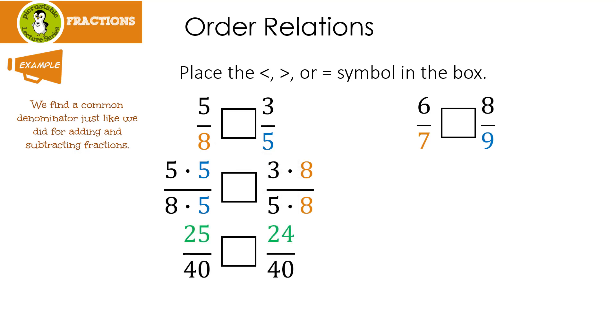When we multiply, we get 25 over 40 and 24 over 40. Since the denominator or the bottoms are the same, we're just going to look at the numerators or the tops. So which is bigger, 25 or 24?